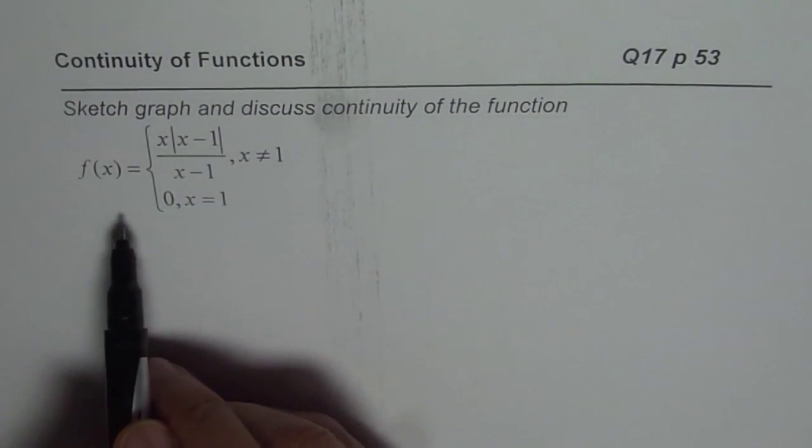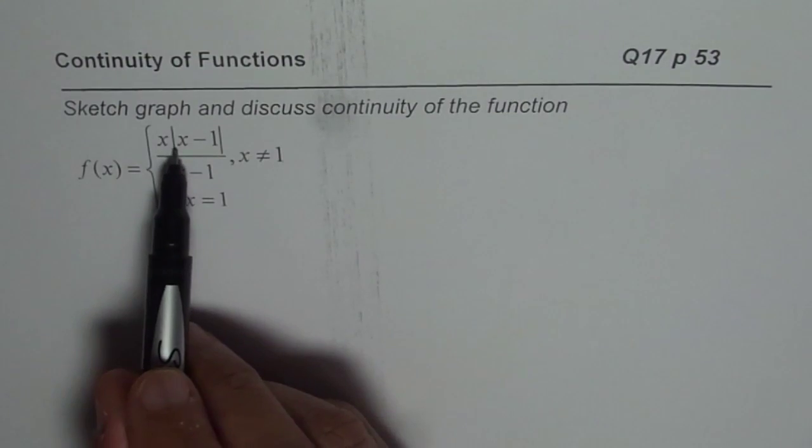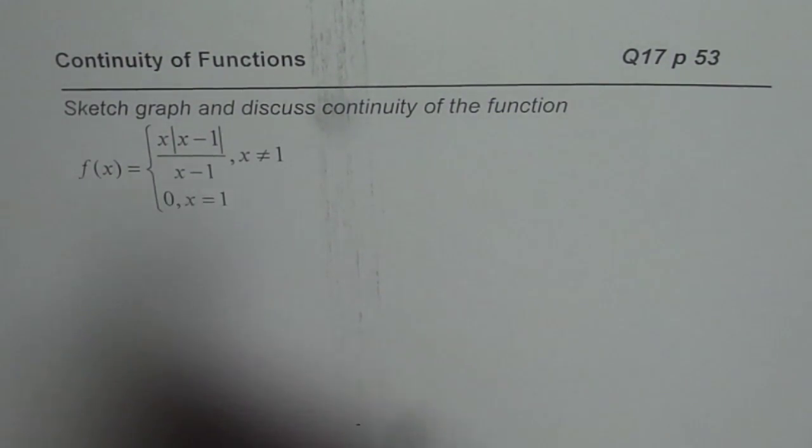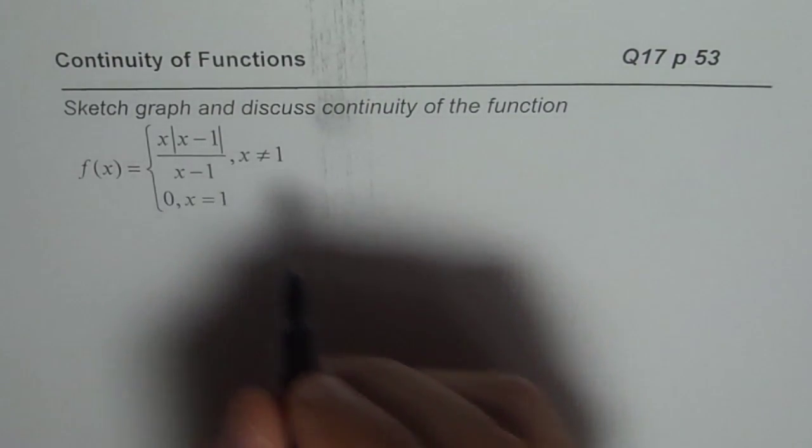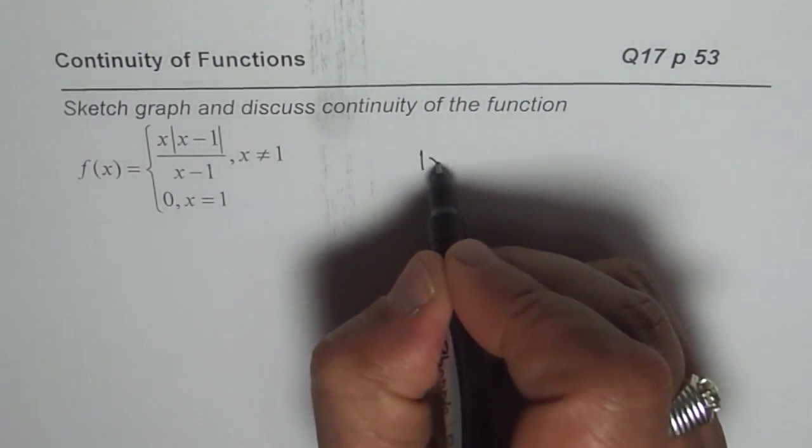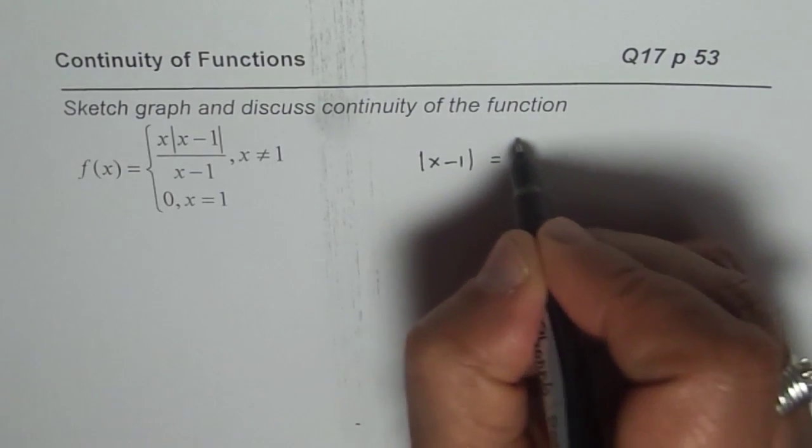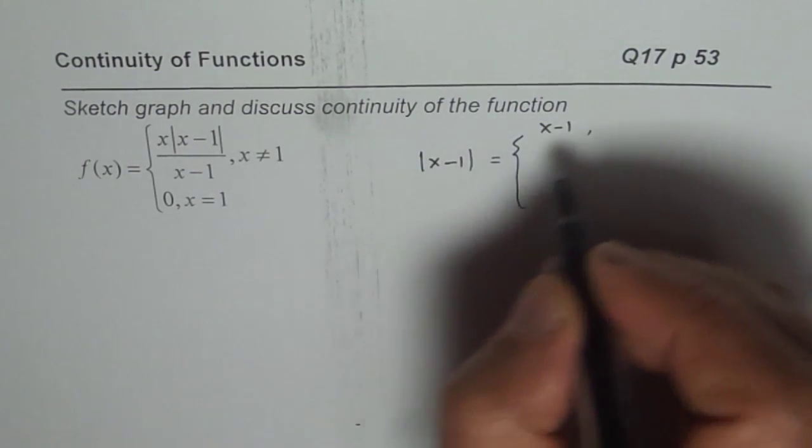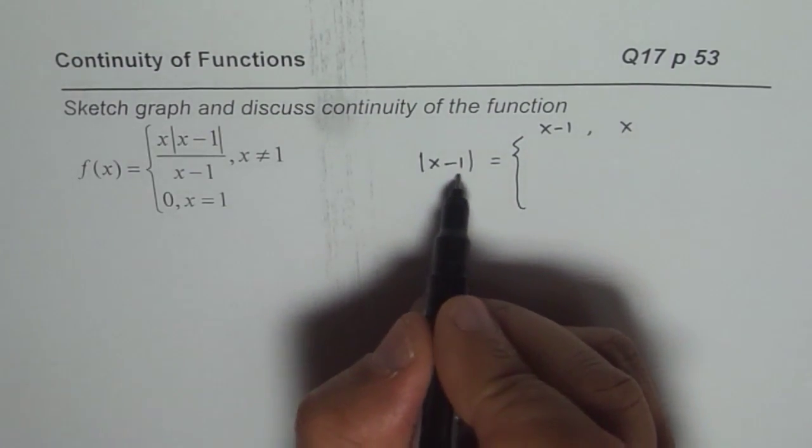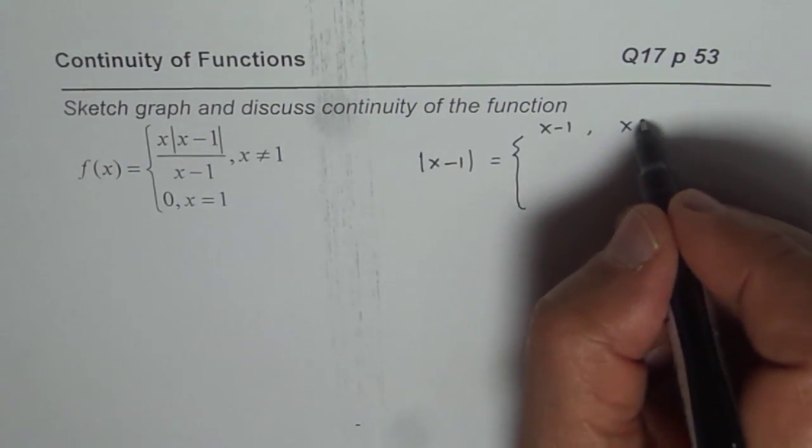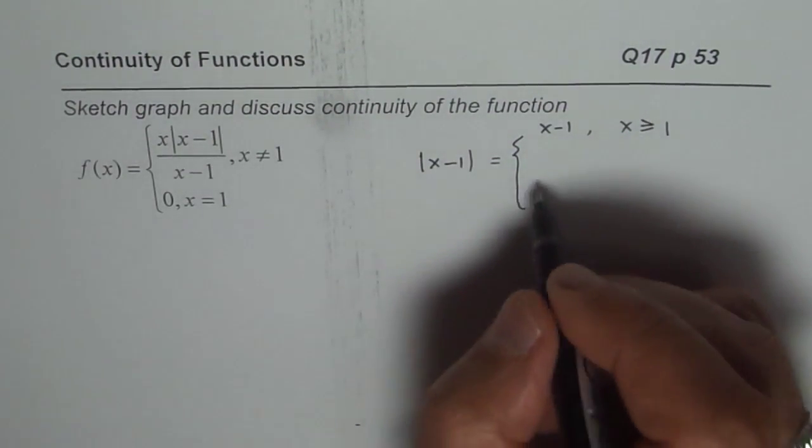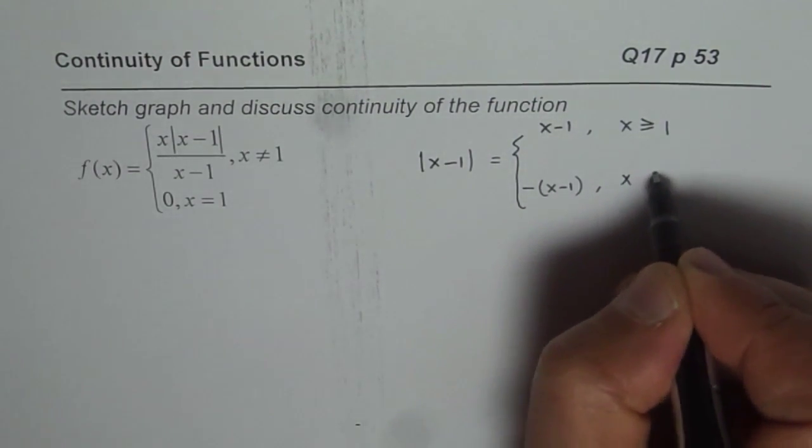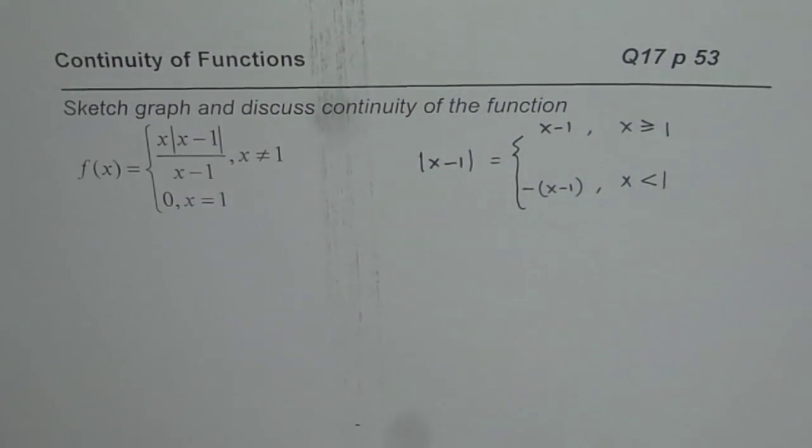So we have an absolute function here. Maria, whenever there is an absolute function, we have to look at it as a piecewise function. Let us redefine our function first. What is the meaning of absolute value of (x-1)? So that is how it is defined.